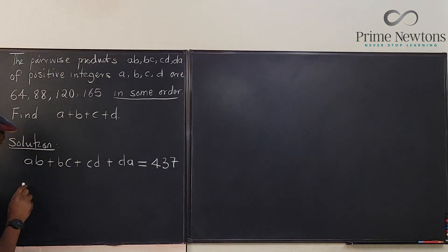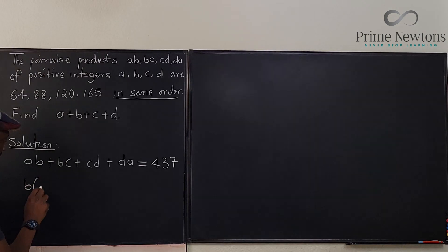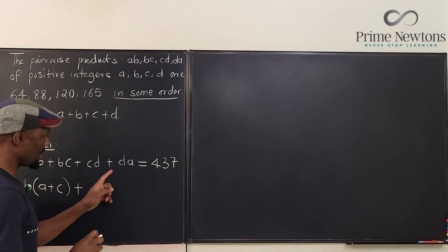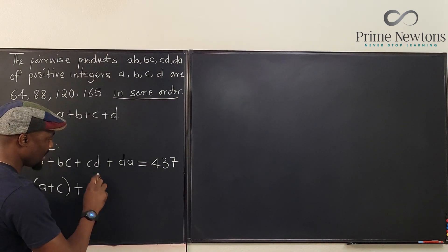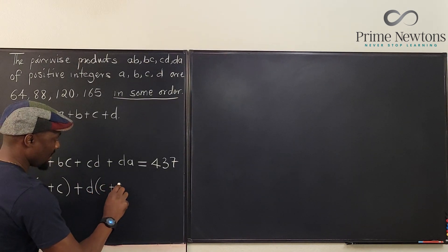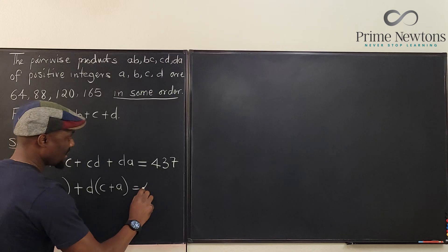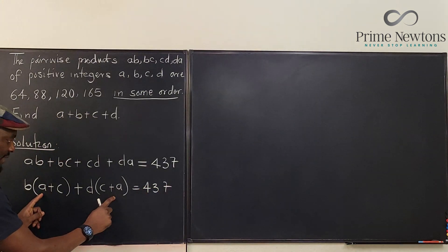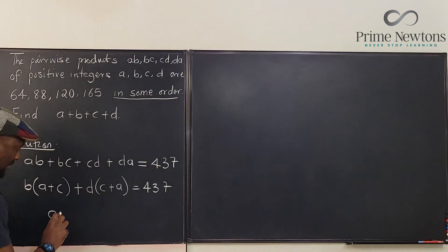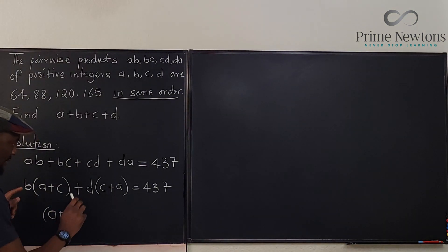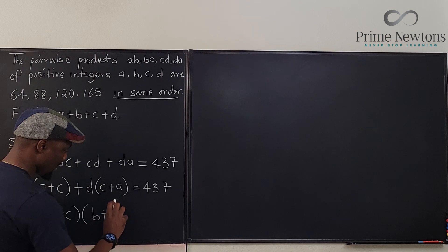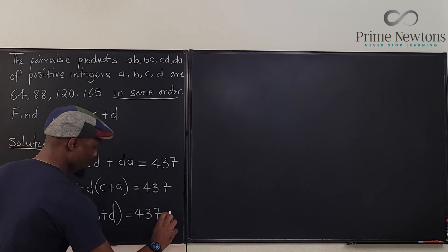These two have B in common, these two have D in common. We can take out B and say we have A plus C. Here we can take out D and say we have C plus A, which is the same thing as A plus C equals 437. This is the same as this. We can factor it out. So we have A plus C times the remainders here, B plus D, and that's equal to 437.